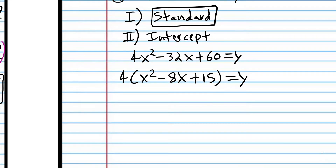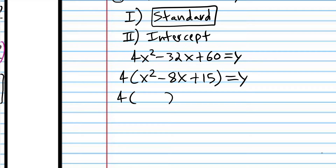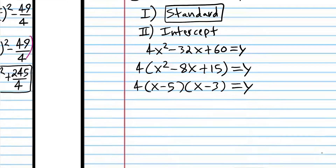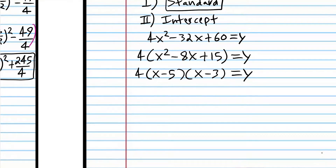So now we're going to factor what we have left when we take the 4 out: what two numbers multiply to 15 and add up to negative 8? That's going to be negative 5 and negative 3. So that is intercept form. Now we're going to convert to vertex form.